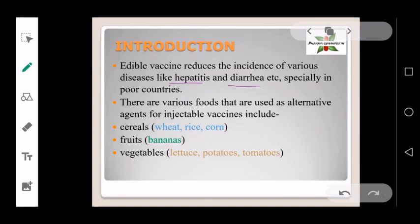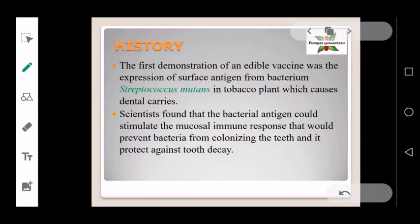Edible vaccines use various foods as alternative agents for injectable vaccines, including cereals, wheat, rice, corn, fruits like bananas, and vegetables like lettuce, potatoes, and tomatoes.